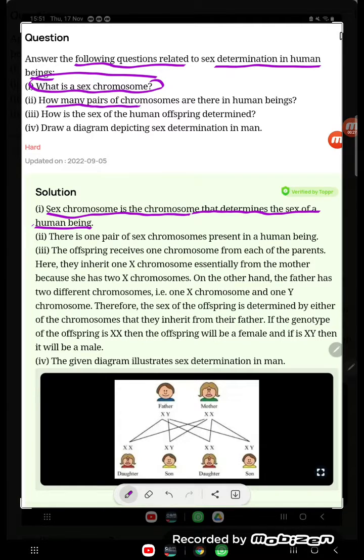How many pairs of chromosomes are there in the human being? There are one pair of sex chromosomes present in the human being. Sex chromosomes are only one pair.